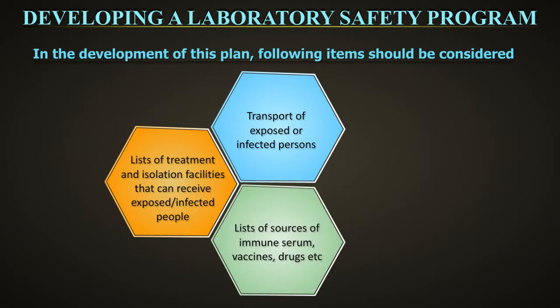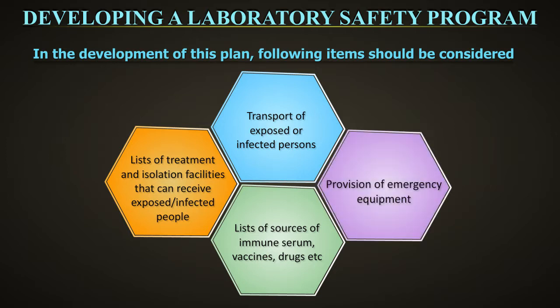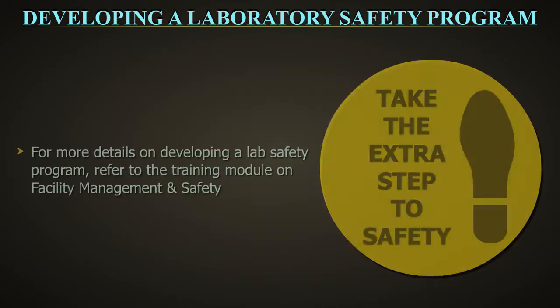The plan should also include lists of sources of immune serum, vaccines, drugs, etc., as well as provision of emergency equipment such as PPE, disinfectants, chemical and biological spill kits, and decontamination equipment and supplies.